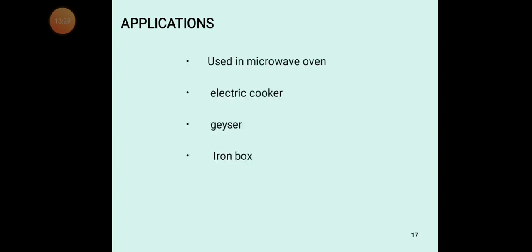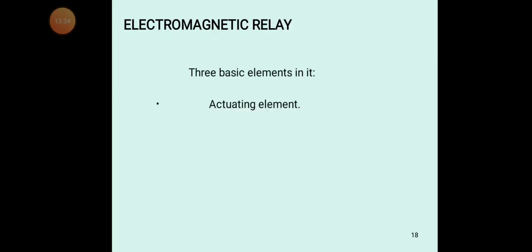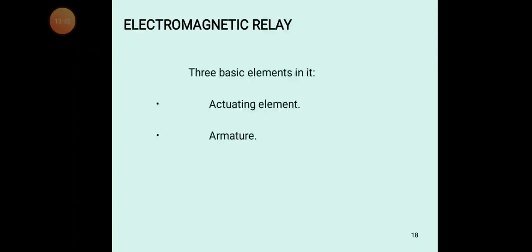Applications of the bi-metallic strip relay include microwave, electric cooker, geyser, and iron box — all use the electro-thermal relay. Now we discuss the electro-magnetic relay. Here we use two energies: electrical energy and magnetic energy. We apply electrical energy to the circuit so that the circuit becomes magnetized, and depending on the magnetism, it attracts the contact and establishes connection between two open points.